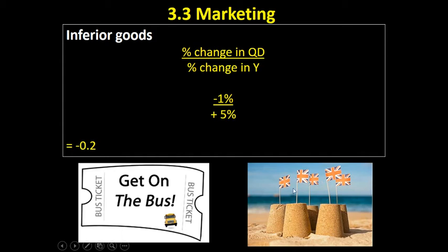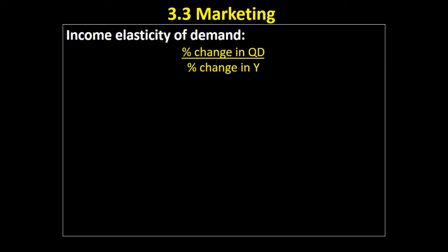Another example is staycations — where rather than going on holiday abroad, if there's a fall in income, people might choose to stay at home and take a cheaper holiday. This was seen after the 2008 financial crisis in Great Britain, where a lot more Britons stayed at home rather than going abroad. Demand for staycations went up as incomes went down — a clear example of an inferior good.